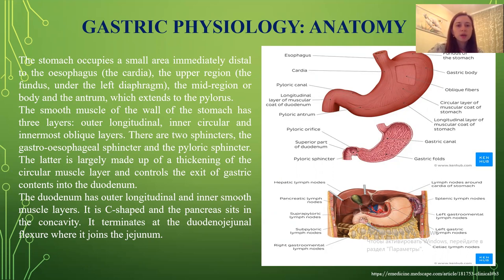The duodenum has outer longitudinal and inner smooth muscle layers. It is C-shaped and the pancreas sits in the concave cavity. It terminates at the duodenojejunal flexure where it joins the jejunum. On this picture you may see the anatomy with the names of all parts of the gastrointestinal tract.